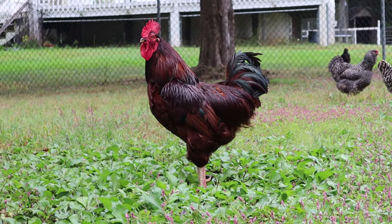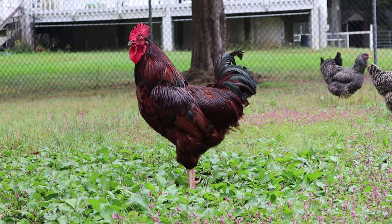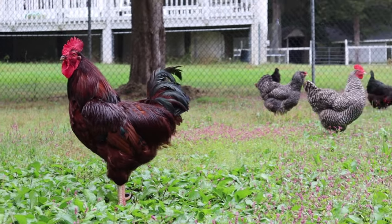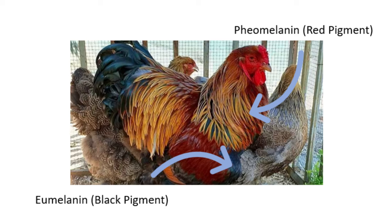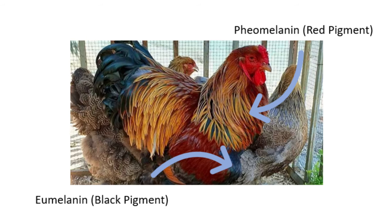It might sound crazy at first, but if you think about it, the only two colors on a chicken are black and red. Every other gene either dilutes or enhances black, red, or both. The black on chickens is referred to as eumelanin, and the red is referred to as phaeomelanin.